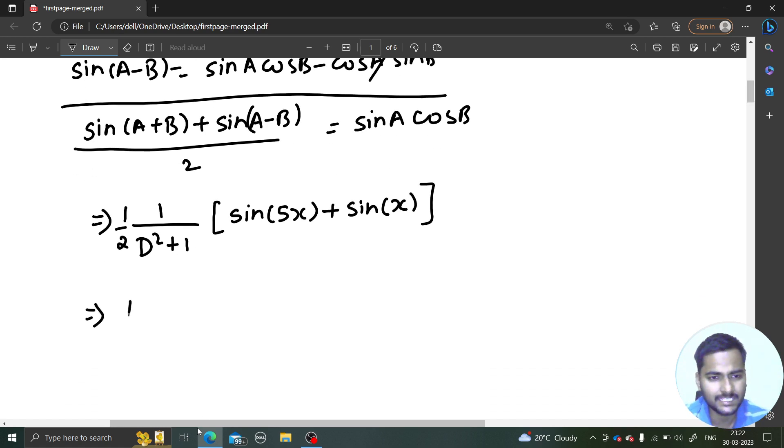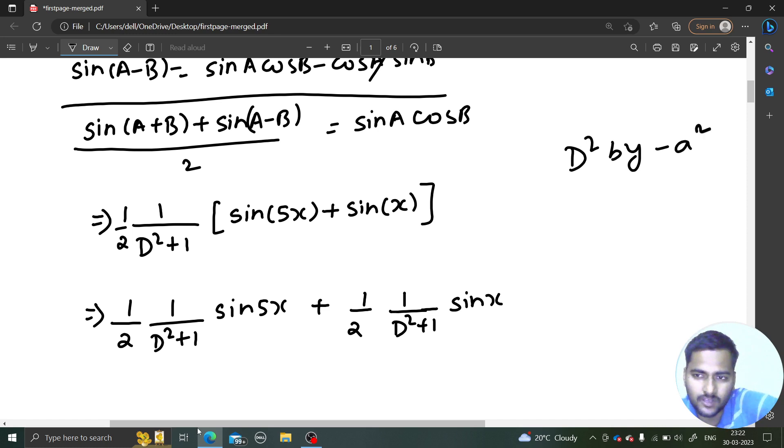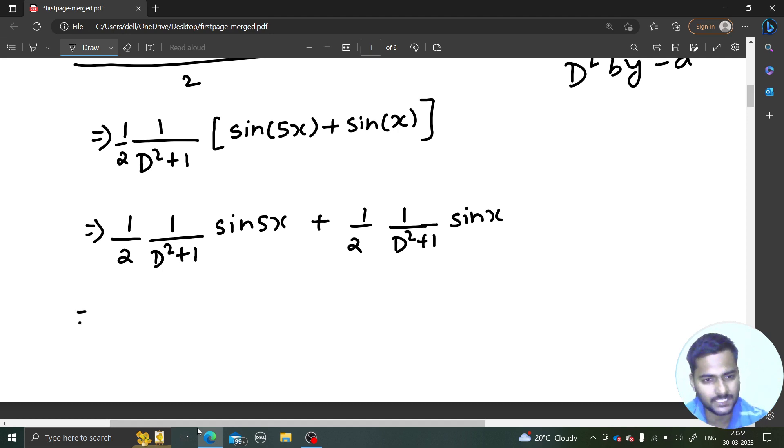Let's split it into two particular integrals. 1/(D²+1) sin(5x). What to do in case you have sin(ax) or cos(ax), you simply replace D² by -a² where a is coefficient of x. Here a is 5, so replace D² by -25. This will be -25 + 1 which is -24. This will be the final one for the first part.